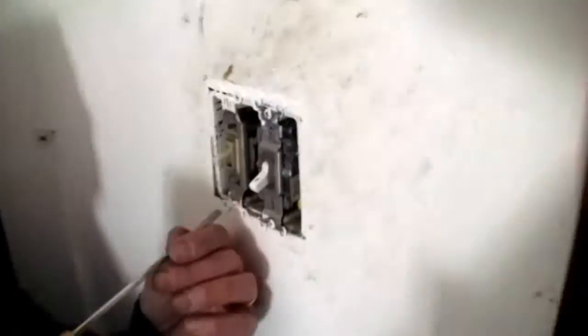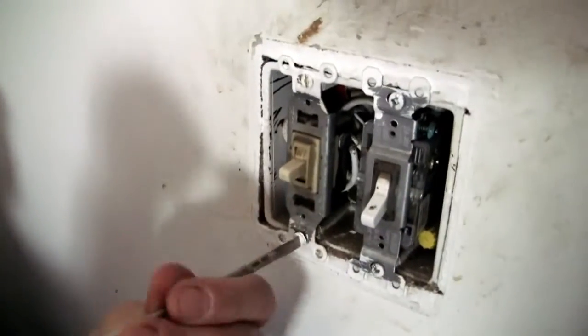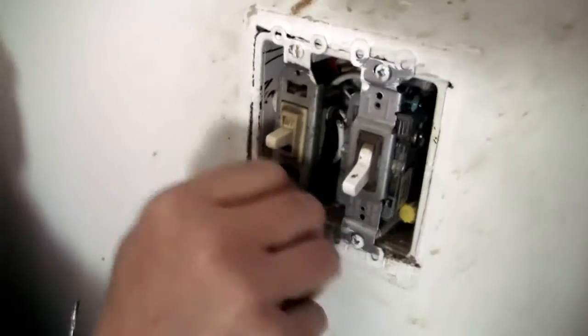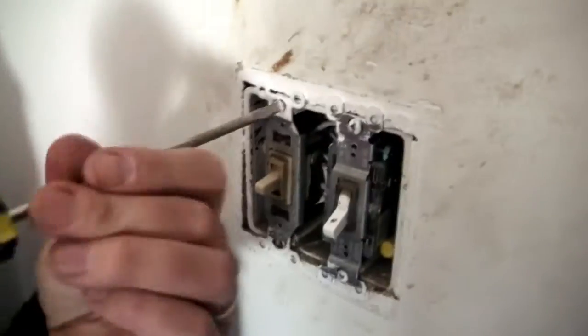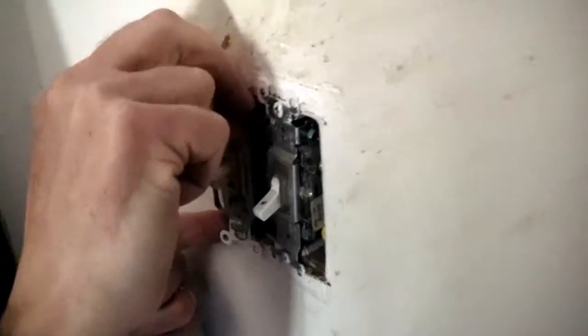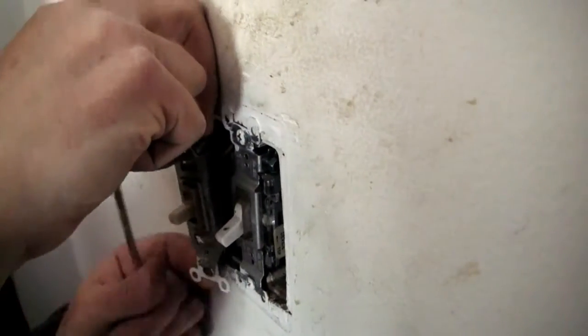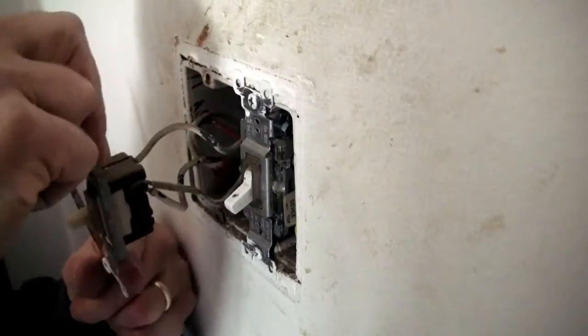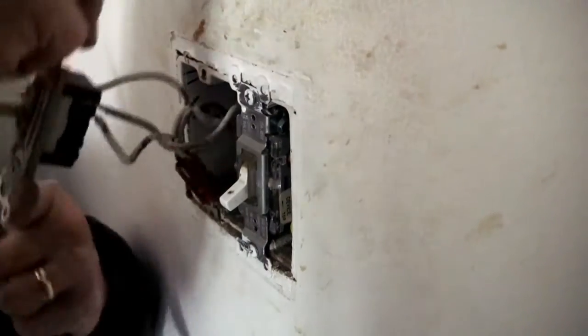Now this switch has two retaining screws. One is on the top and one is on the bottom. So we just have to take those off. Once you get the retaining screws off, you can just pull this switch out and you can see how it's wired.